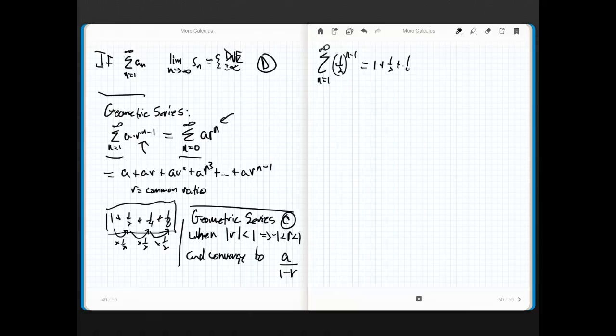So 1 half plus 1 fourth. I get a little lazy with these sometimes. You're going to have to yell at me. What is A? Well, A is always the first term of the geometric series. Always, always, always. In this case, it's 1.